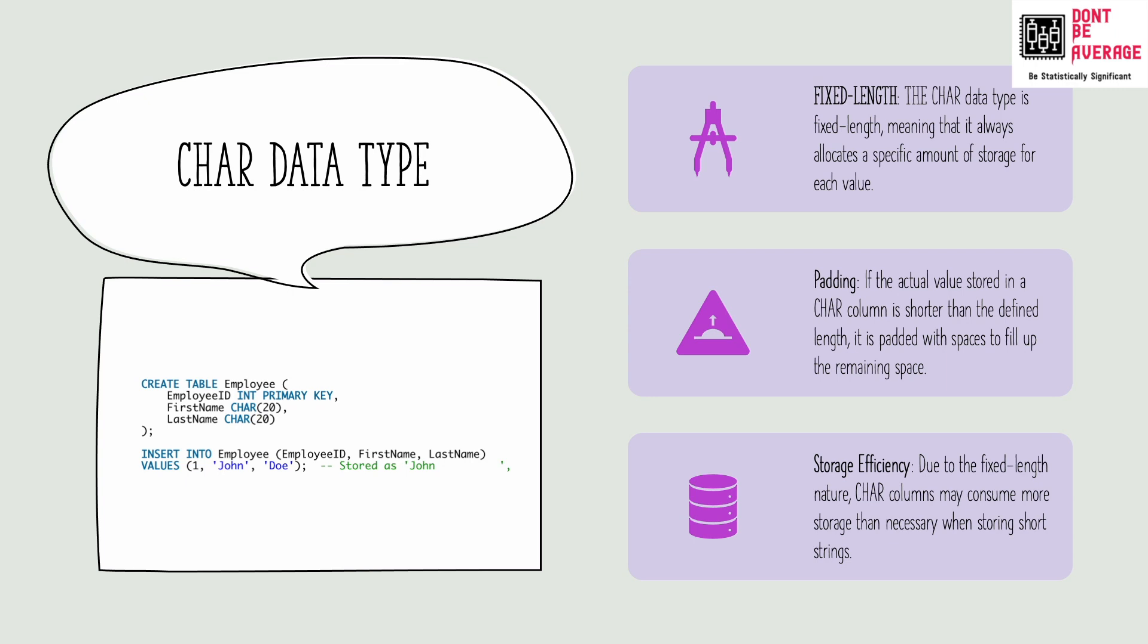Now let's look at an example. In this example, we have created a table called employee with the columns called first name and last name. And both these columns are char data type with a length of 20. When we insert the name John into the first name column, it is padded with spaces to fill the entire 20 characters. So that is how char data type works.